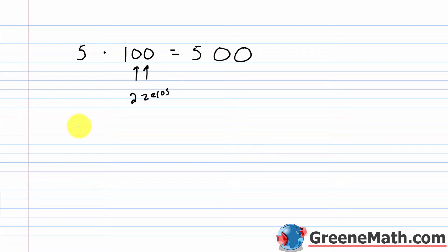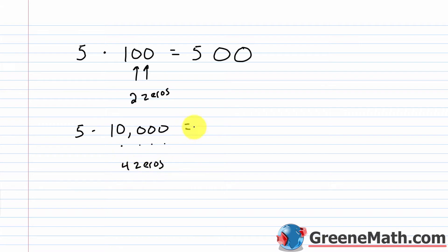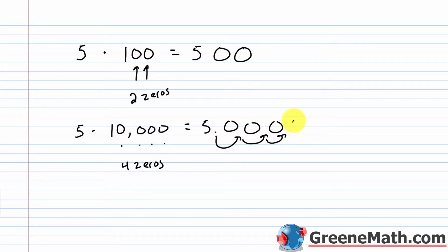Similarly, 5 times 10,000 has four zeros, so I move the decimal point four places to the right, ending up with 50,000.